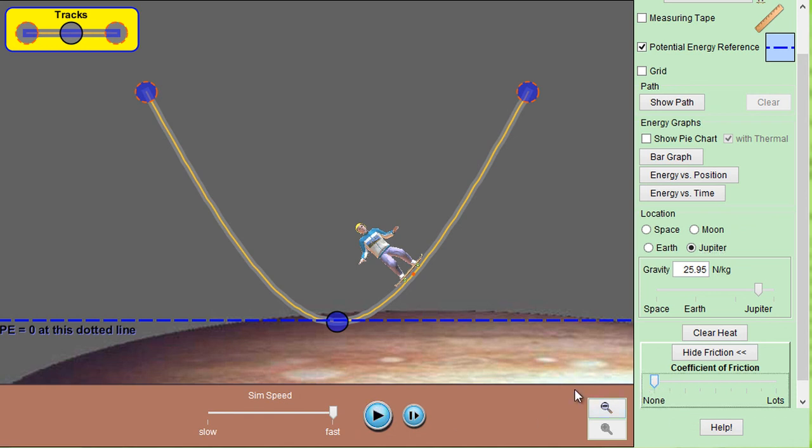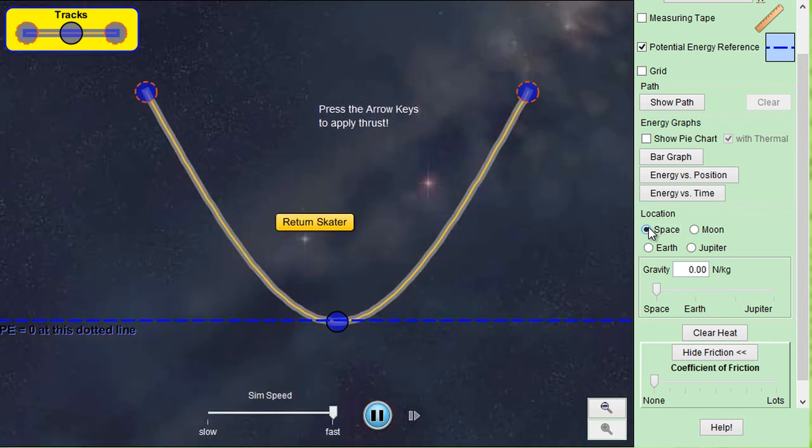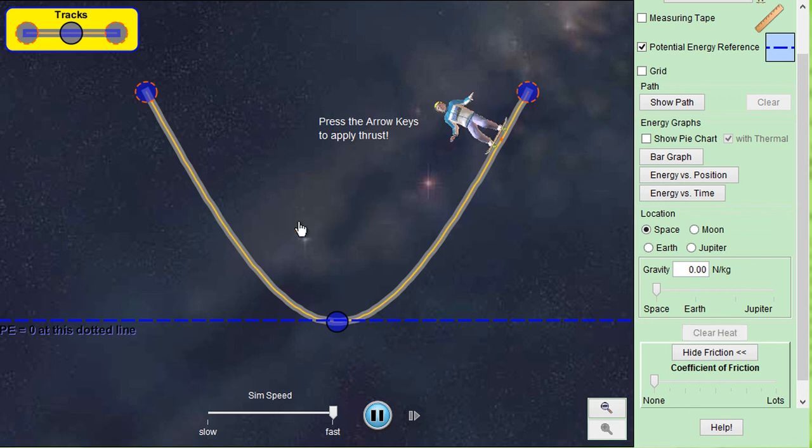And you'll notice that the value for G is different on Jupiter. So you can see more rapid acceleration and deceleration. If you want to go into deep space where there is no gravity, then you can do that. Bring him back. There he is.